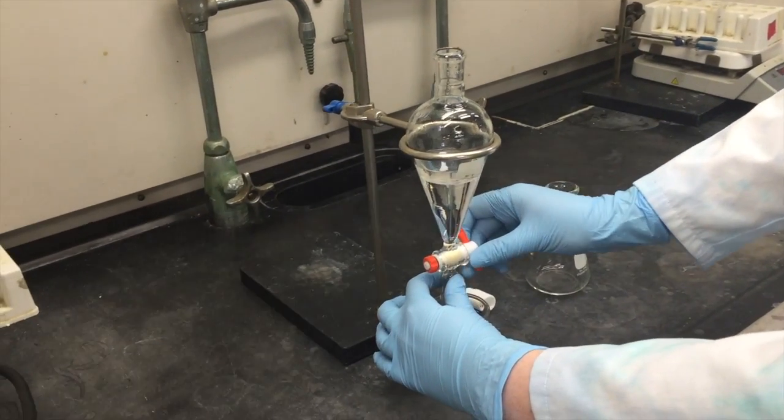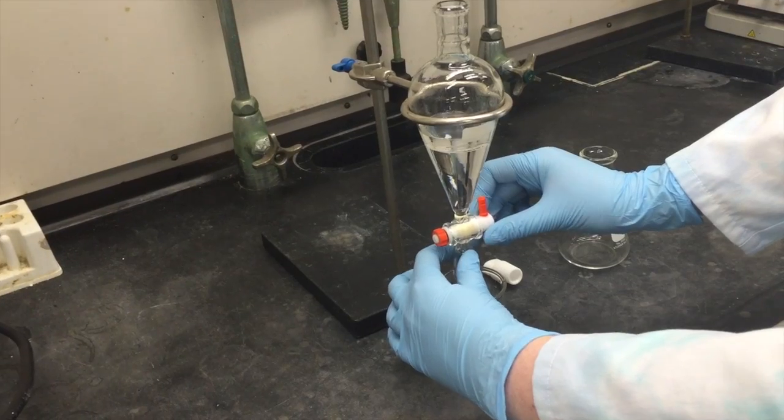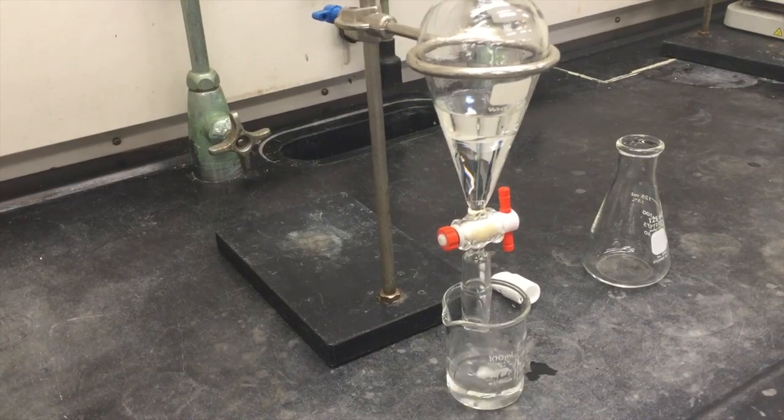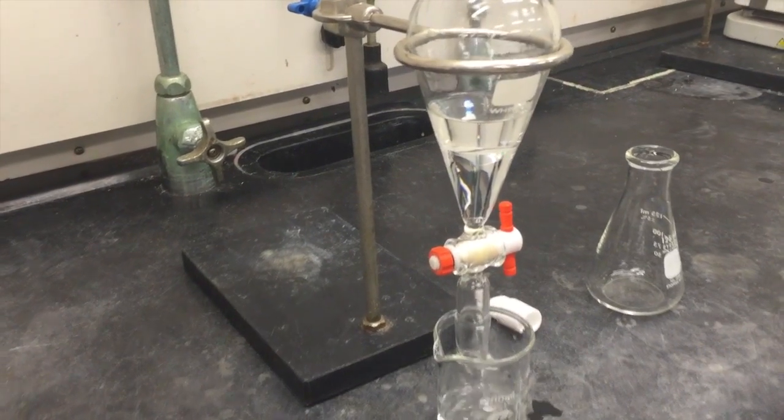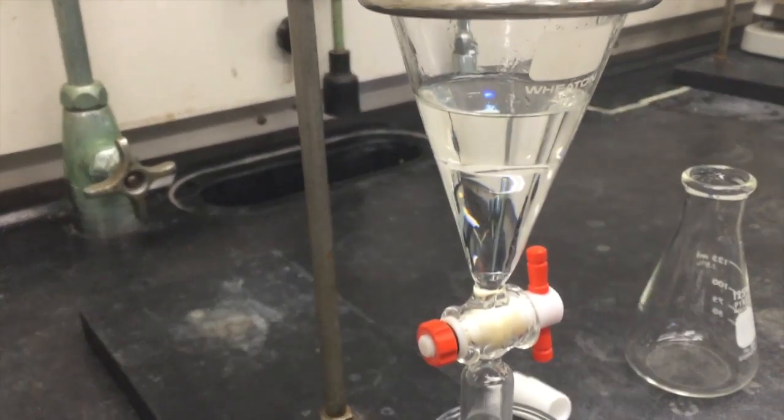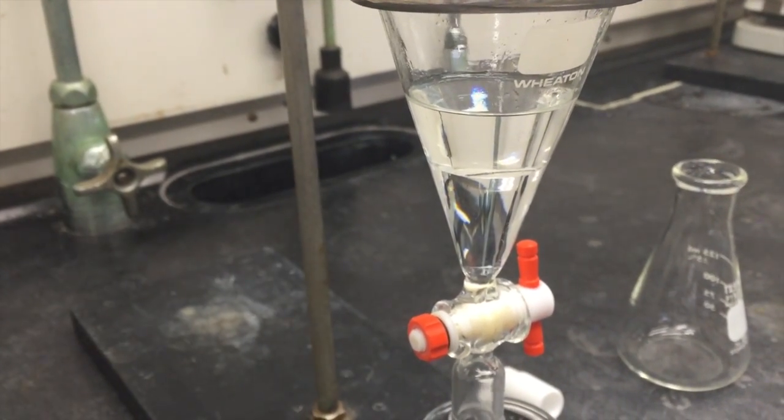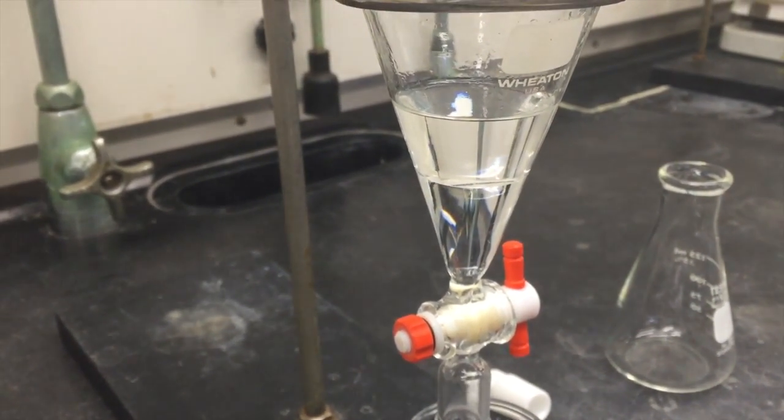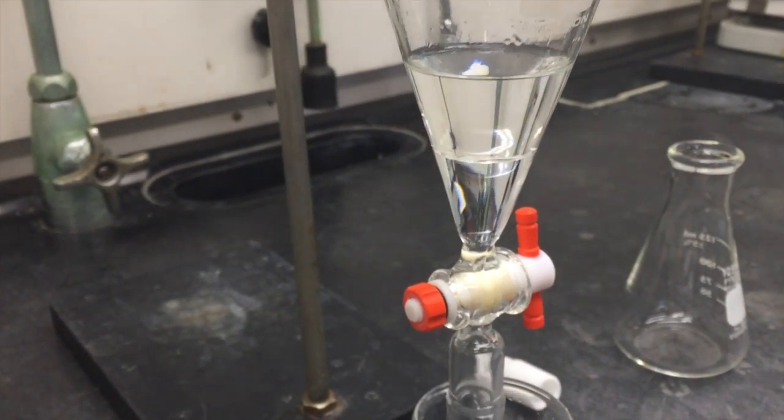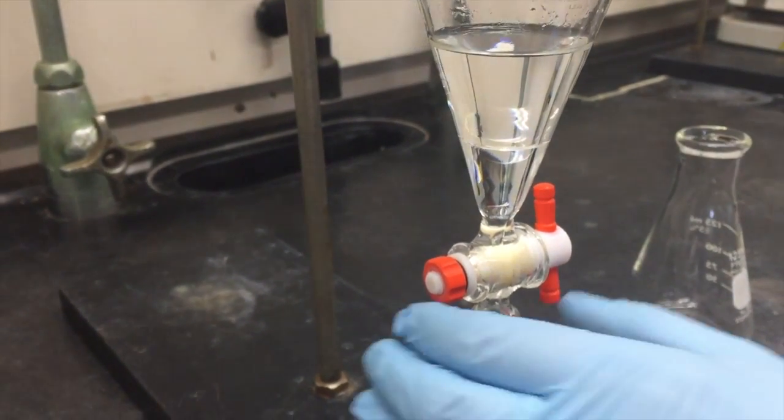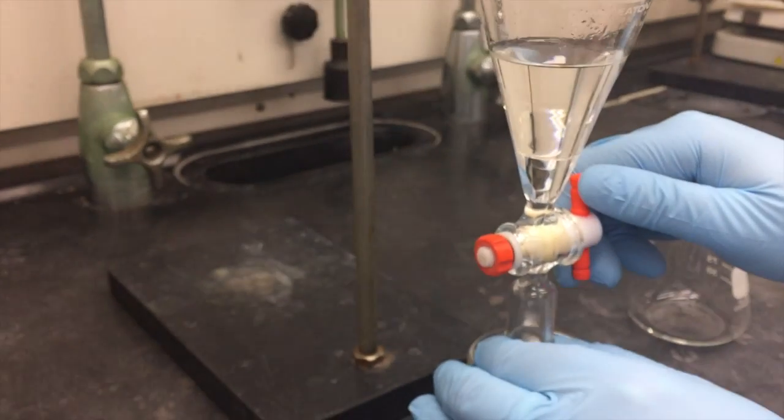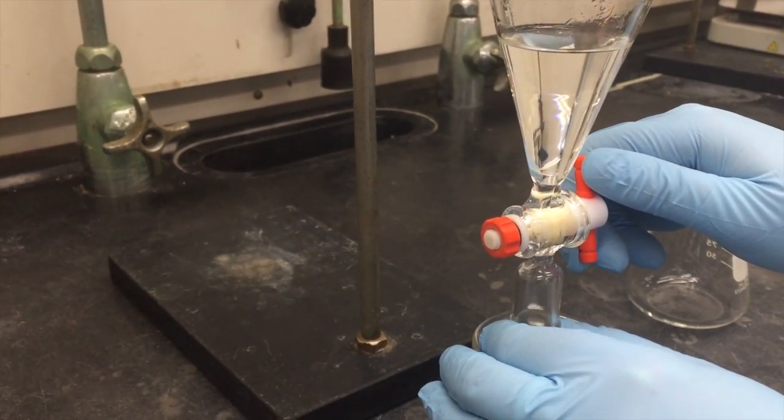Turn the tap parallel to the funnel to open the funnel and remove the aqueous phase. Be careful not to remove any organic solvent during this step. Close the tap by turning it perpendicular to the funnel.